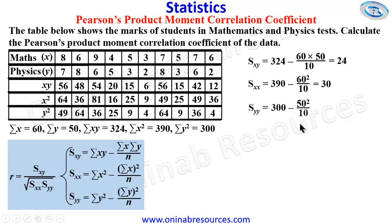Sigma Y is 50, then we squared it, divide by 10, which is the number of observations. This gives 50.